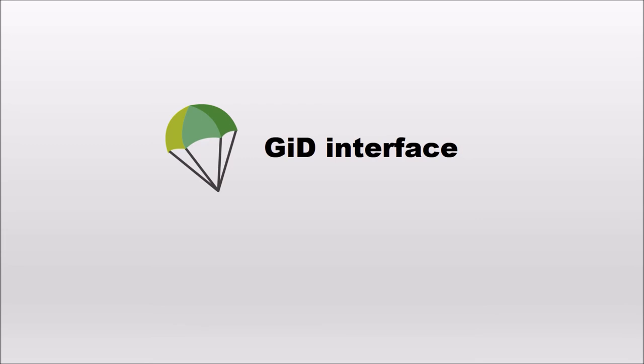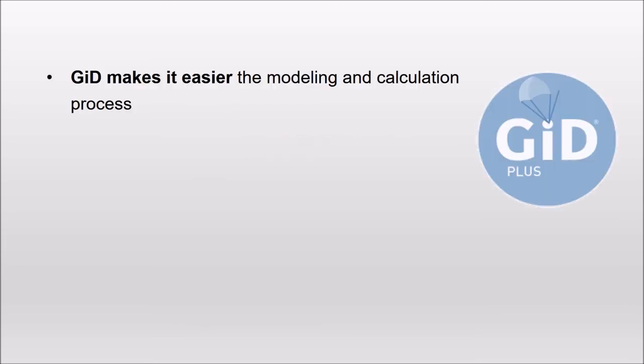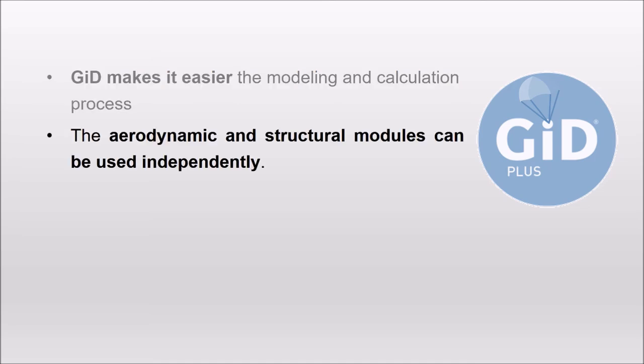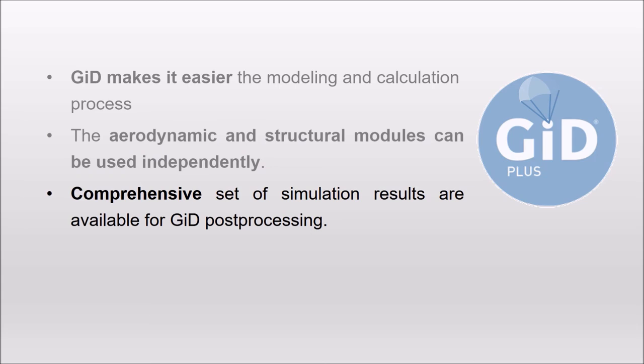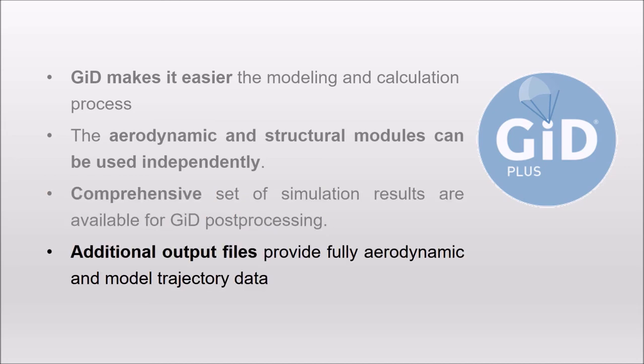The program ParaJuice is integrated into GiD. GiD makes easier the entire simulation process, from the CAD definition, the setup of the problem and the calculation, to the analysis of the results. GiD also allows to use the aerodynamic and structural solvers in an independent manner. This makes ParaJuice useful for different aerodynamic and structural problems and applications. In the post-process, the user can access very comprehensive information from the aerodynamics and structure. Additional files are also generated for further processing, for example, they are required to analyze the trajectory of the system.